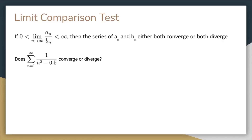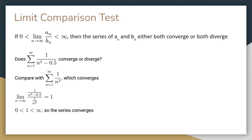The limit comparison test states that if the limit as n approaches infinity of a_n over b_n equals a finite number other than zero, then the series of a_n and b_n either both converge or both diverge. Consider the series of 1 over (n squared minus 0.5) from n equals 1 to infinity. We can compare that with the series of 1 over n squared, which converges by the p-series test. The limit as n approaches infinity of the ratio of the terms of the series equals 1, so the series both converge.